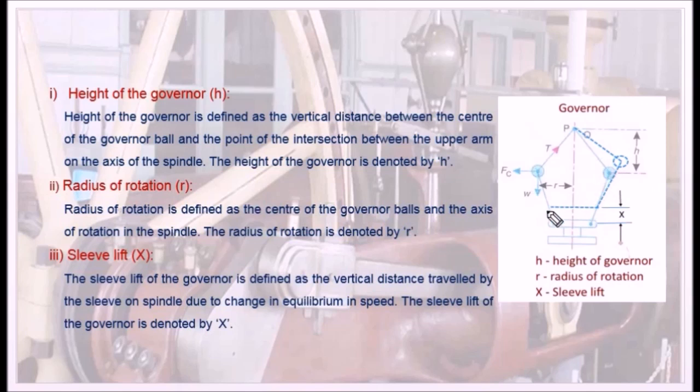These balls are connected to a sleeve with the help of a lower link. We know whenever the spindle rotates, the arms also rotate along the spindle. Because of the centrifugal force developed on these balls, the balls may rise up or down from this equilibrium line. H is the height of governor, R is the radius of rotation, and X is the sleeve lift. Now let us see the definitions of these terms.